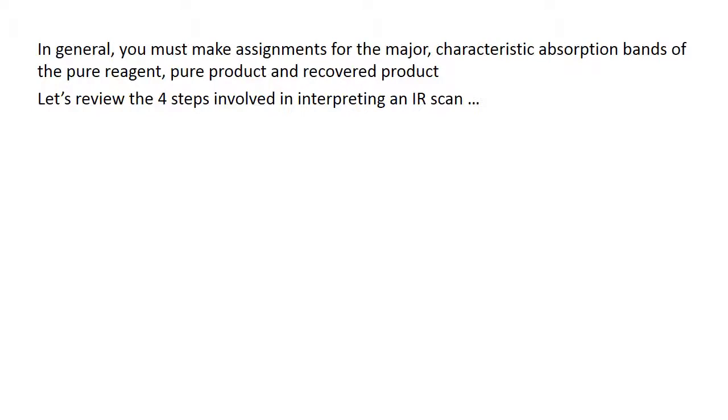In general, we must make assignments for the major characteristic absorption bands. We do this by four steps. Step one is to look at the structure of the molecule so that you can identify each kind of functional group that you will find in the scan.